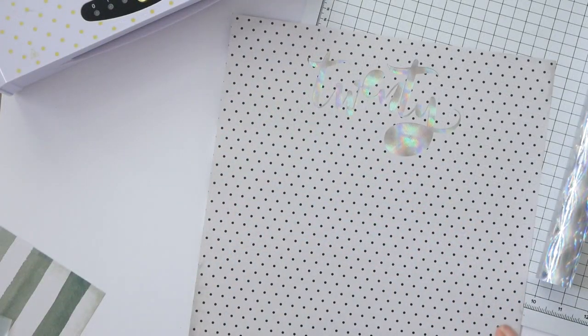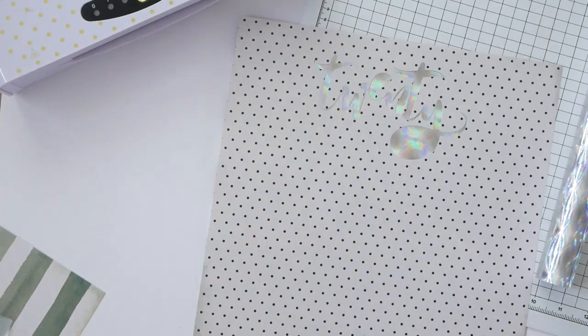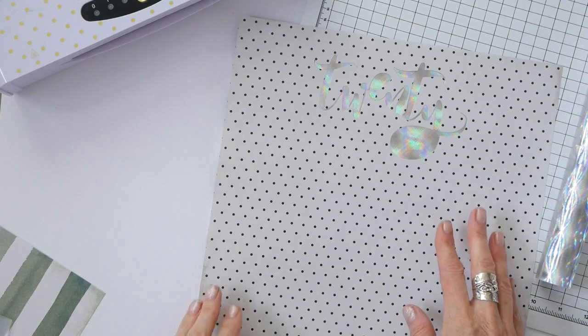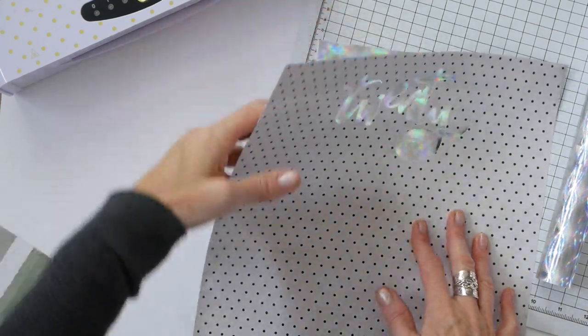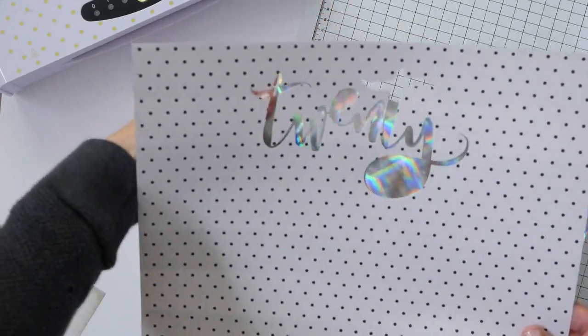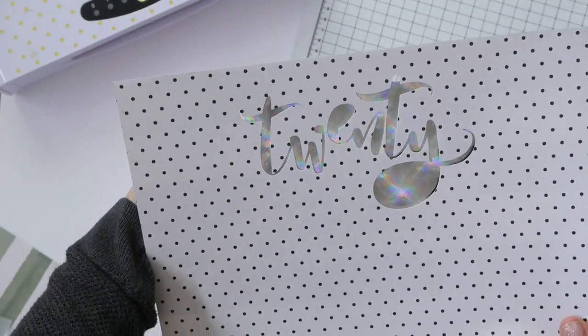I have already removed the background from the Minc machine and you can see here I'm using some winter wonderland pattern paper. I was just lining up the backer to my cutout just to make sure everything's covered real nice.